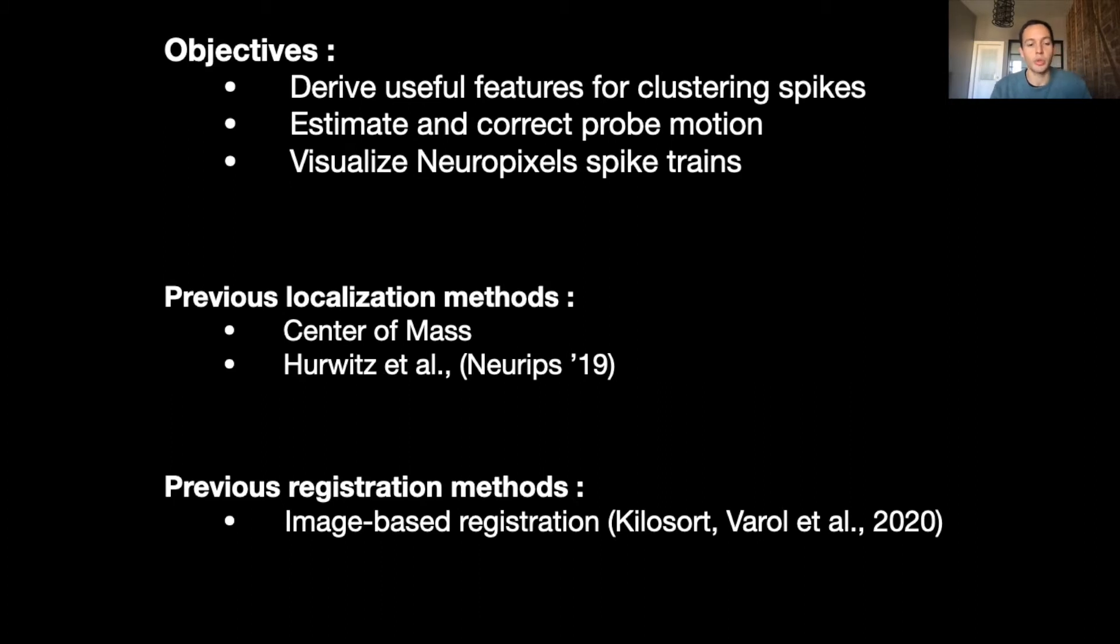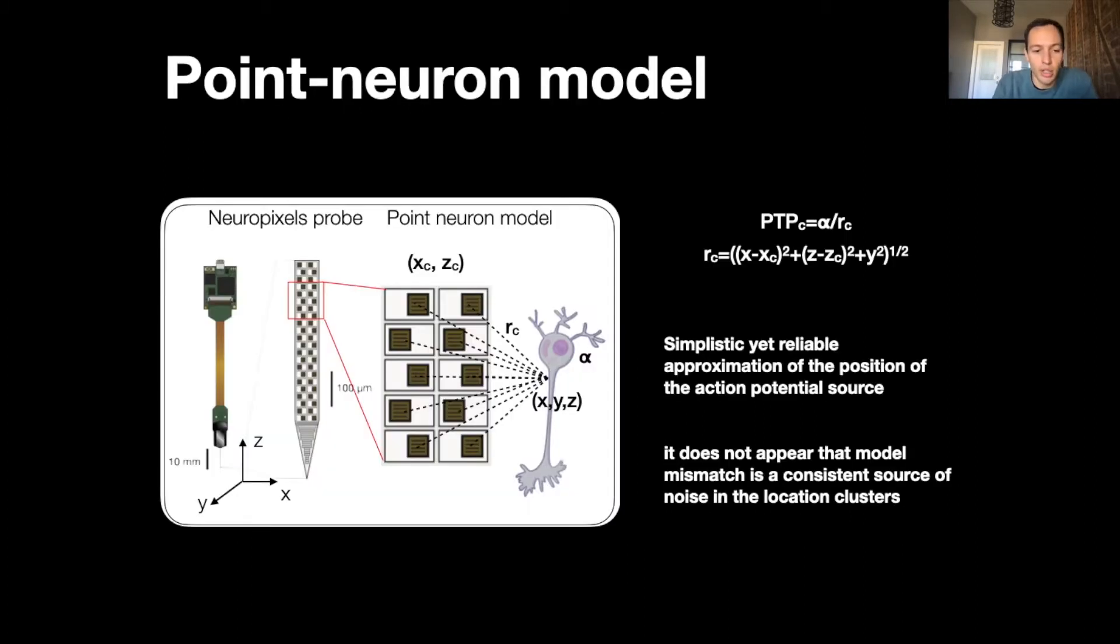So how are we doing this localization? We model the neuron as a point source of the signal, and under this approximation the spike amplitudes recorded on each channel will be inversely proportional to the distance of the neuron to the channels. It allows us to perform triangulation to estimate the 3D locations of the neuron.